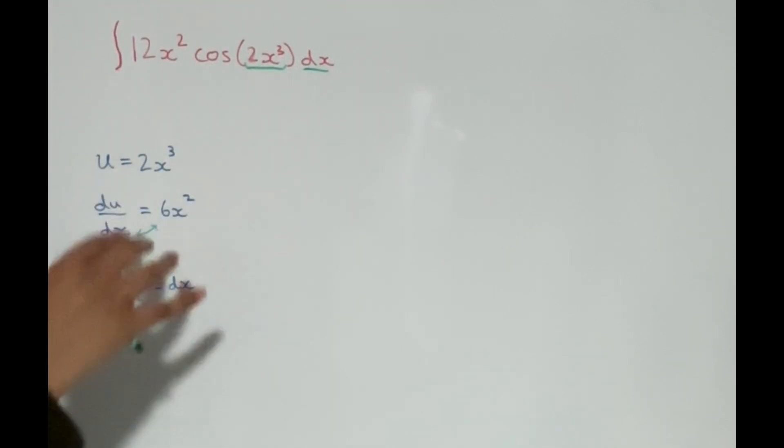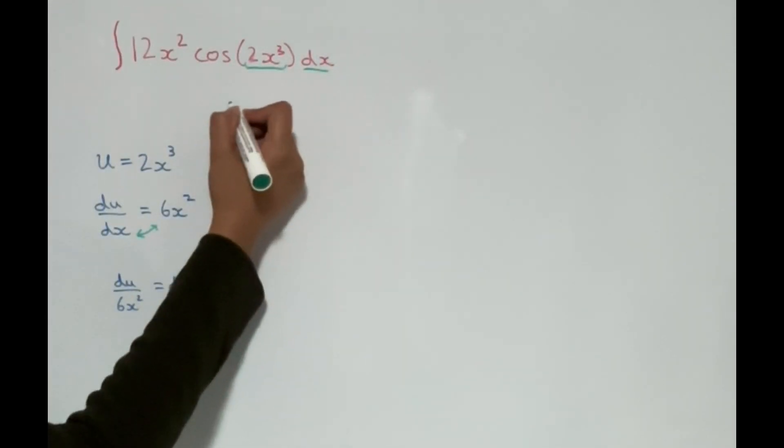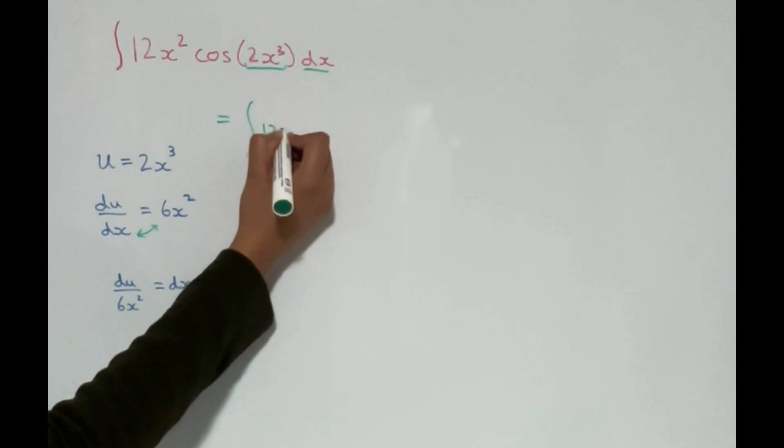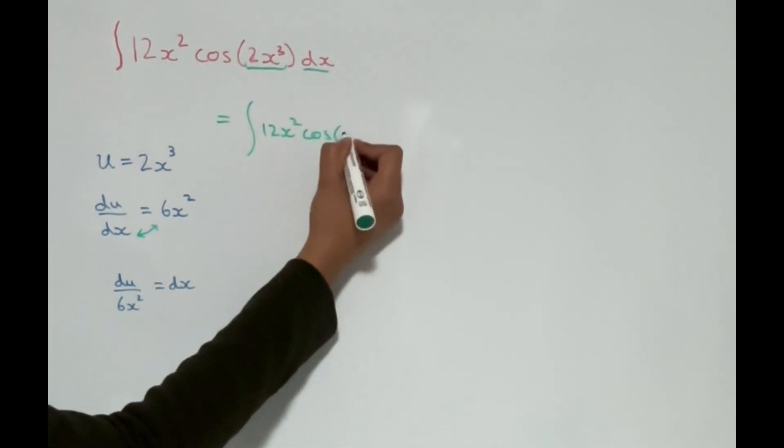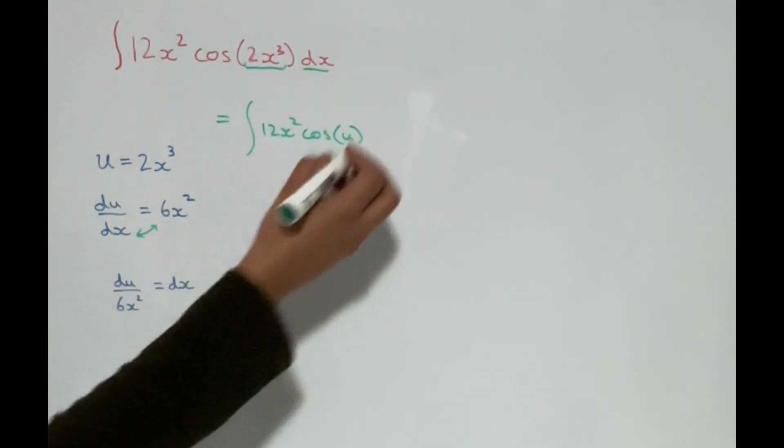And now when we substitute this information back into this, our integral becomes, we write this as it is, which is 12x squared cos, 2x cubed becomes u, and dx becomes du/(6x squared).